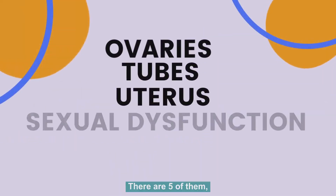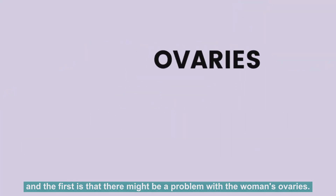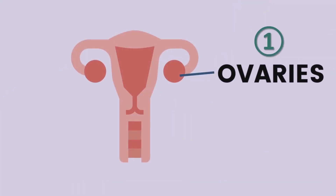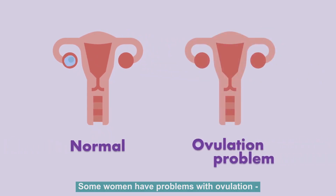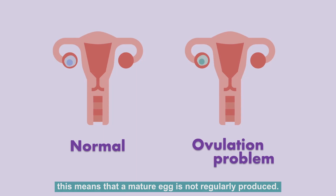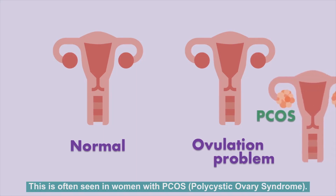There are five of them, and the first is that there might be a problem with the woman's ovaries. Some women have problems with ovulation, meaning that a mature egg is not regularly produced. This is often seen in women with PCOS.